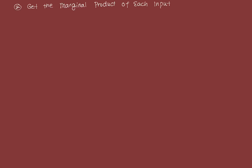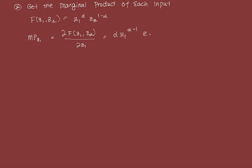For the second question, we want the marginal product of each input, which is just the partial derivative of the production function with respect to each input. The marginal product of Z1 is the first-order partial derivative with respect to Z1, which equals alpha times Z1 raised to alpha minus 1, times Z2 raised to 1 minus alpha.